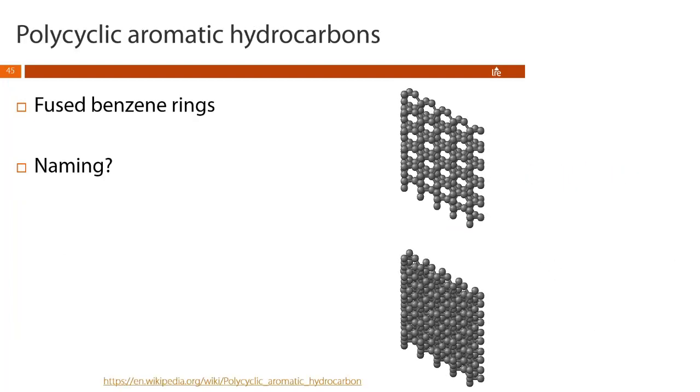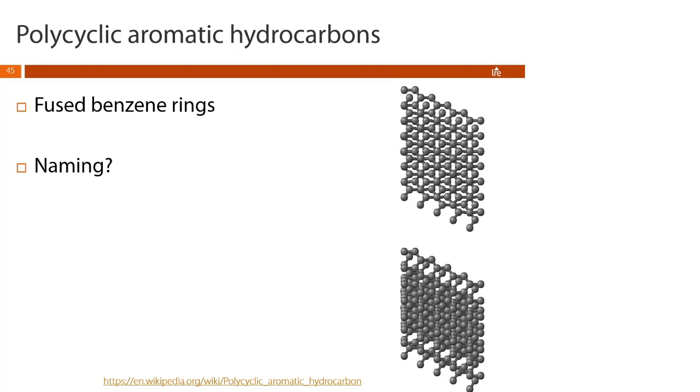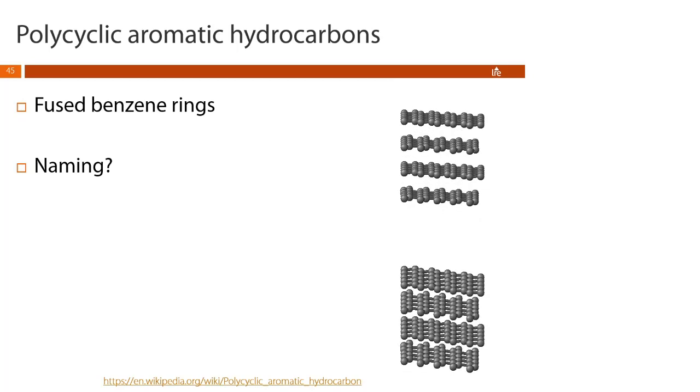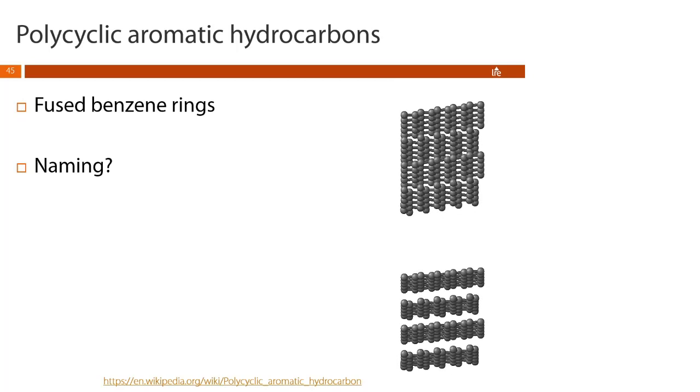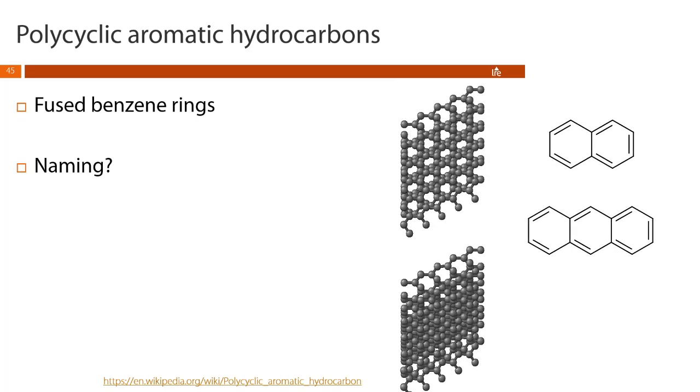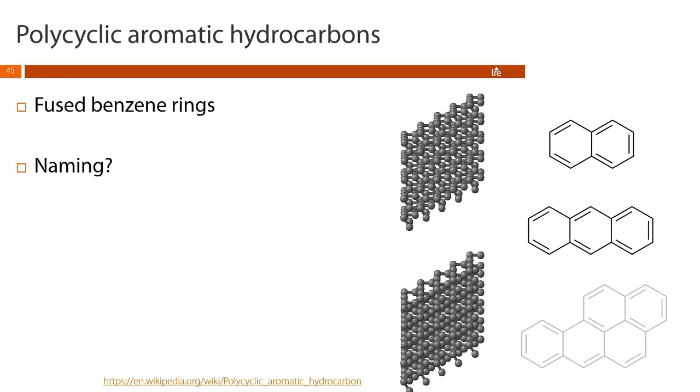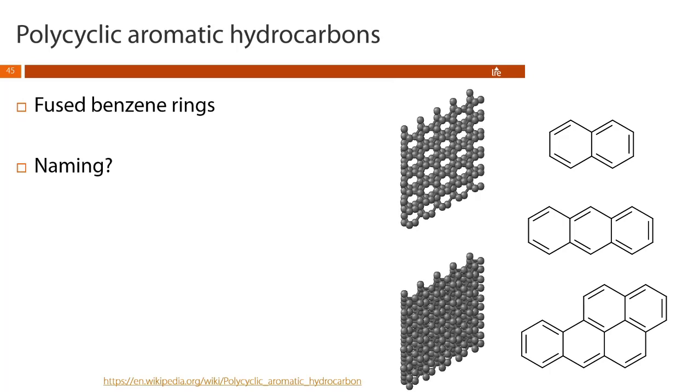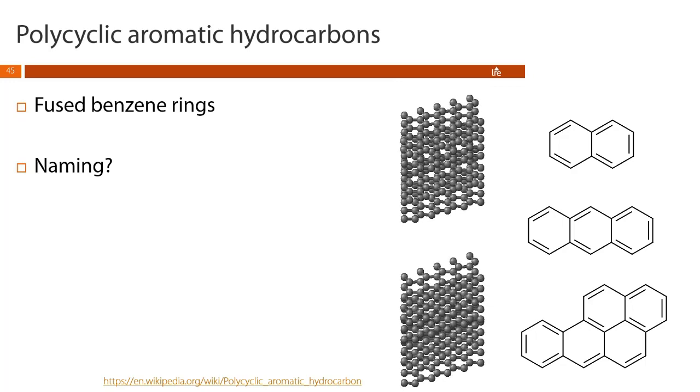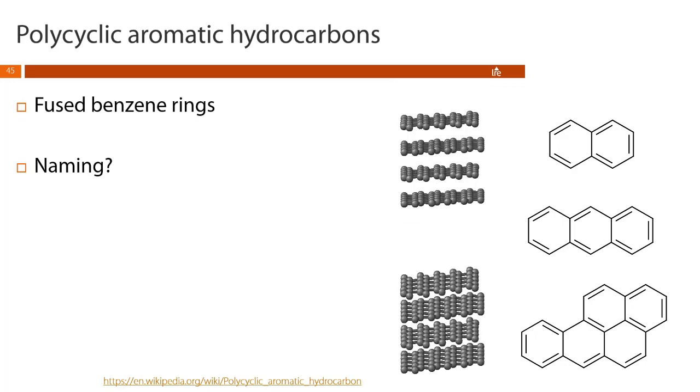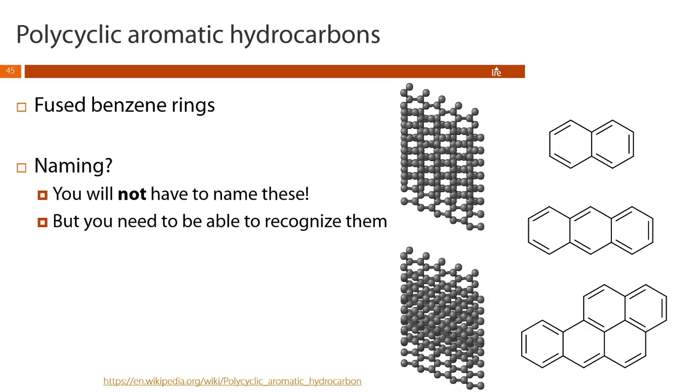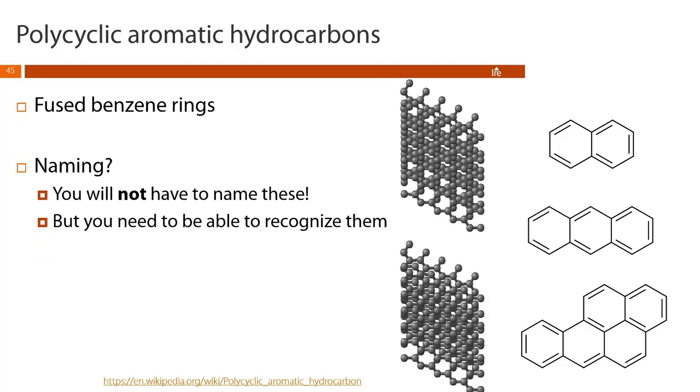Okay, so the last thing I want to touch on today are molecules that we refer to as polycyclic aromatic hydrocarbons. So these are large molecules that consist of fused benzene rings. These are molecules like naphthalene and anthracene, which are found in coal. Benzopyrene, which is the carcinogen that is produced from the burning of tobacco or the burning of gasoline, or in large repeating graphite sheets like you see here. So how do we name these things? Well, you don't. You do not need to name these, but you do need to be able to recognize them on an exam.